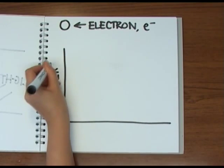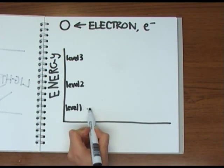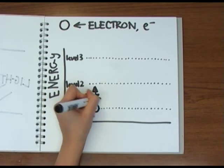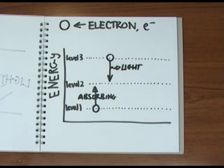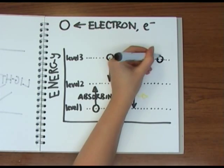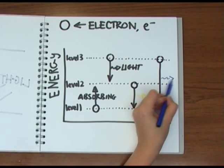In an atom, electrons can only exist at certain energy levels. One way the electrons can move between these energy levels is by absorbing or emitting light. Different colors of light have different energies, so transitions between different energy levels are associated with different colors.